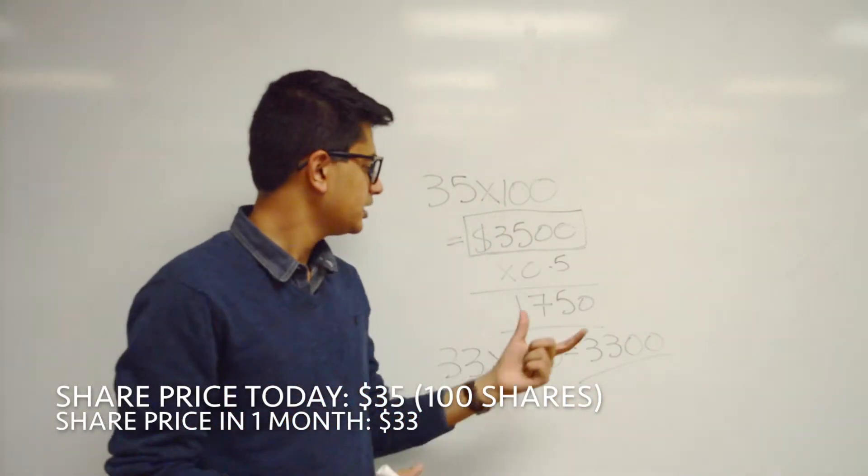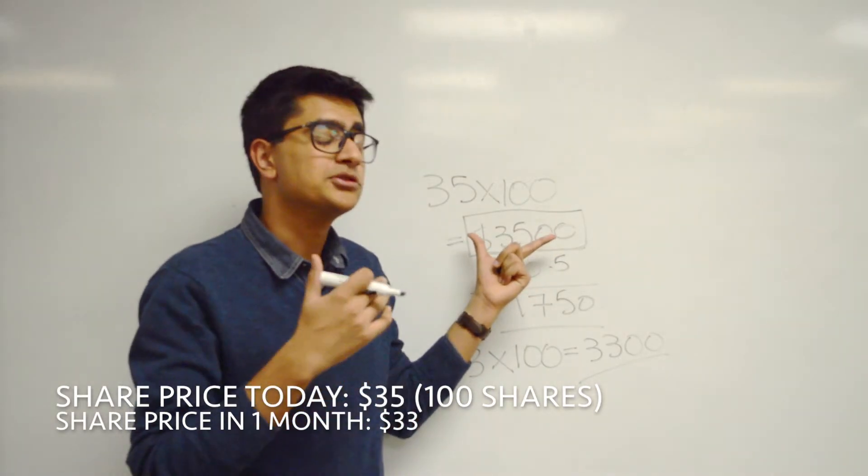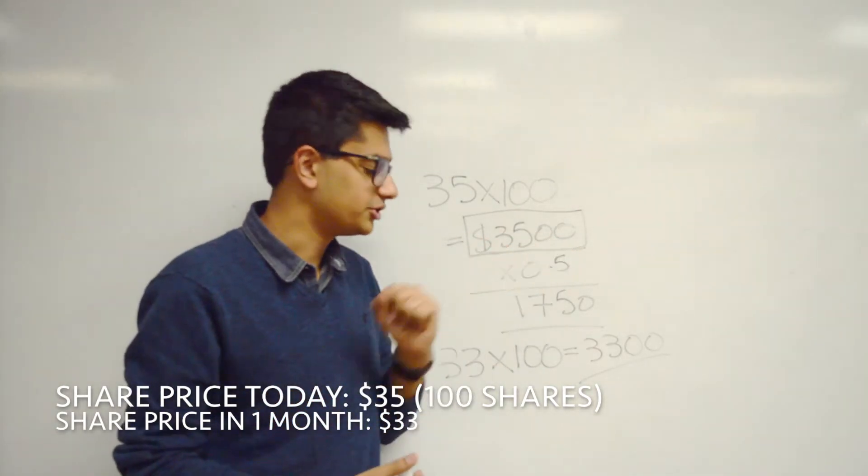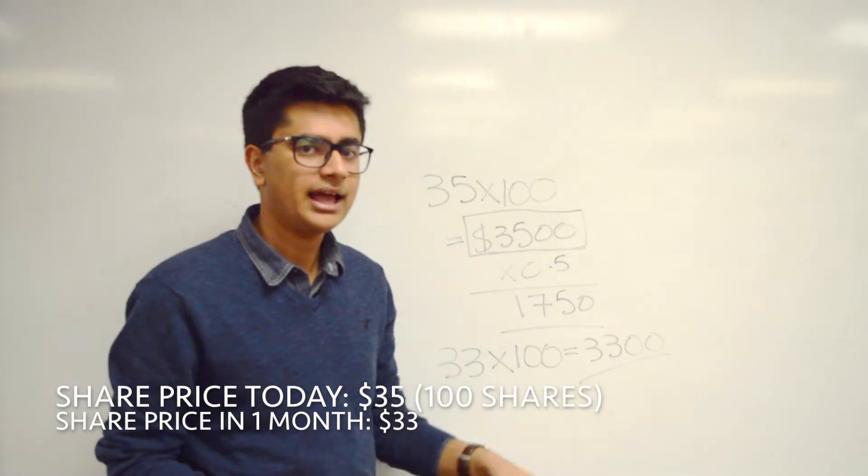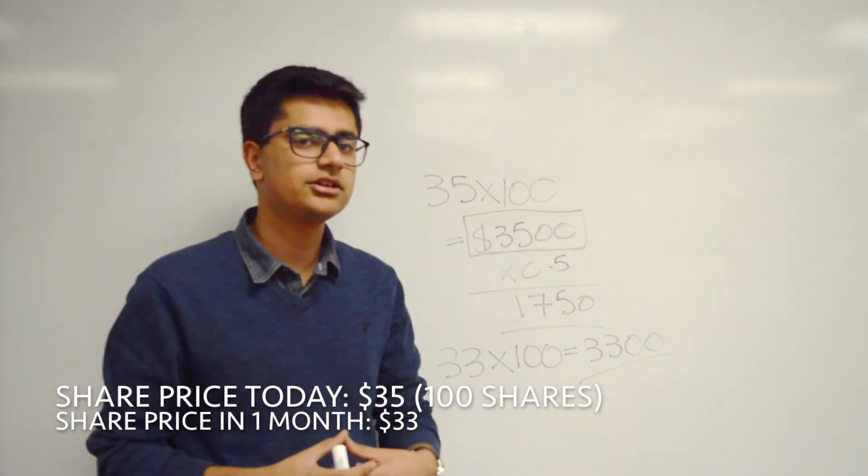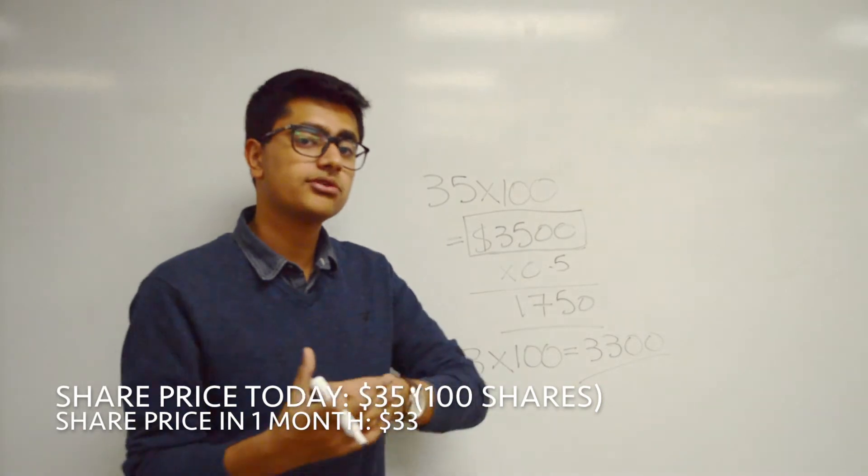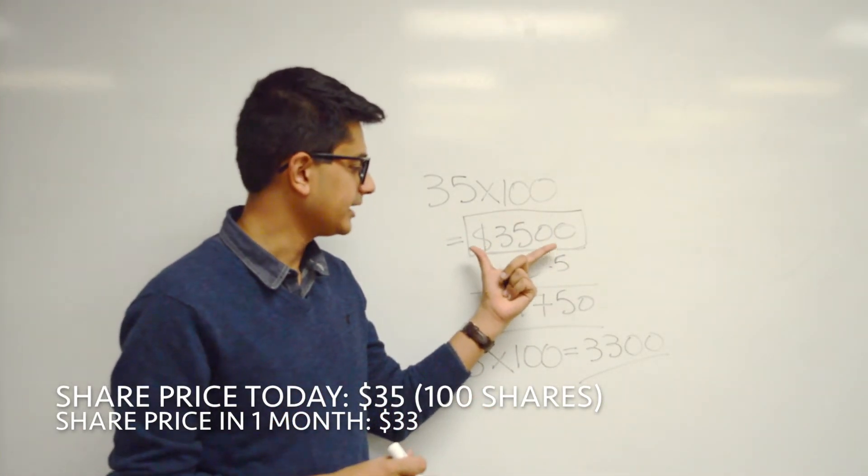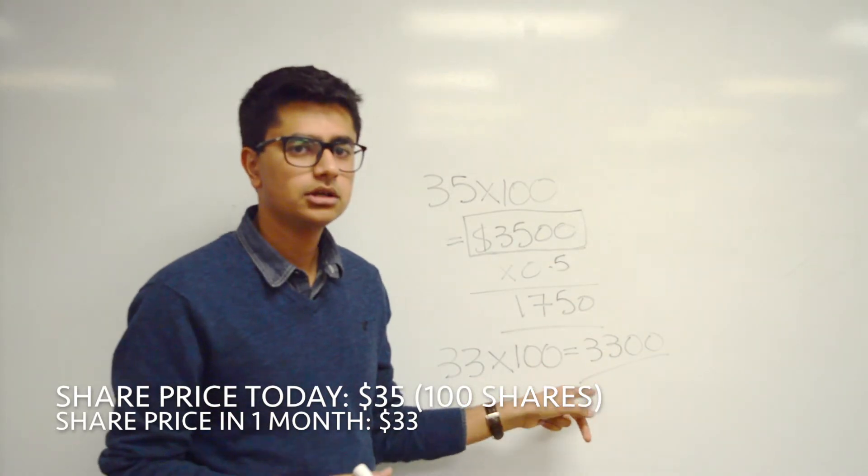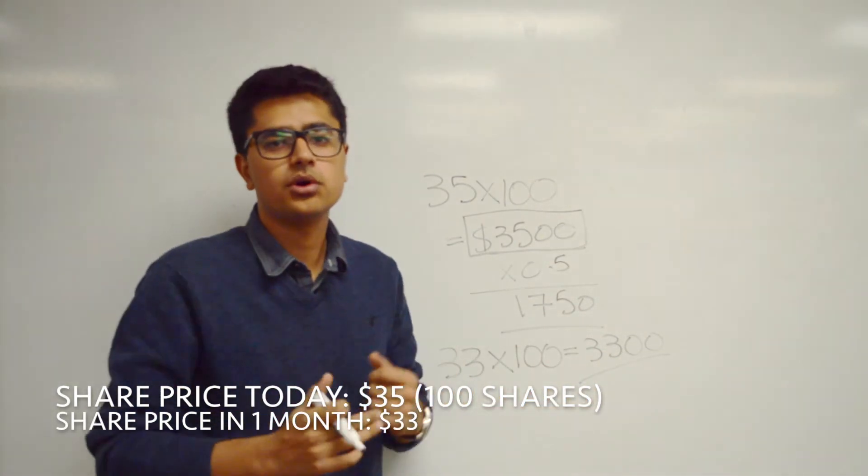Let's just quickly recap. You sold the shares at $3,500 and you bought them back one month later at $3,300. And these were actually the broker's shares, so at the end of the day, you don't keep the shares, you keep the profit. So $3,500 worth of money made and $3,300 spent, the profit that you made off it was $200.